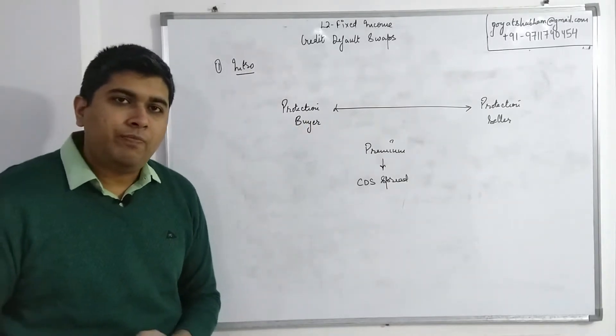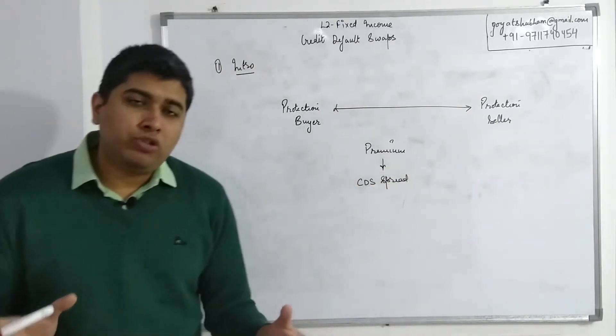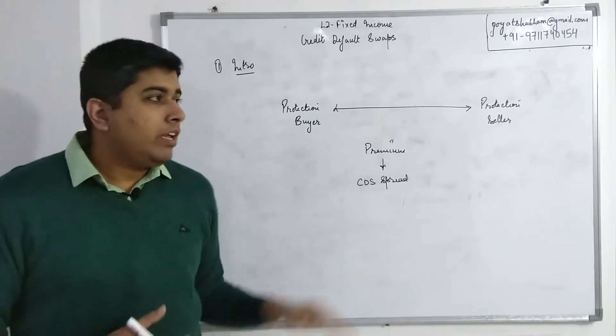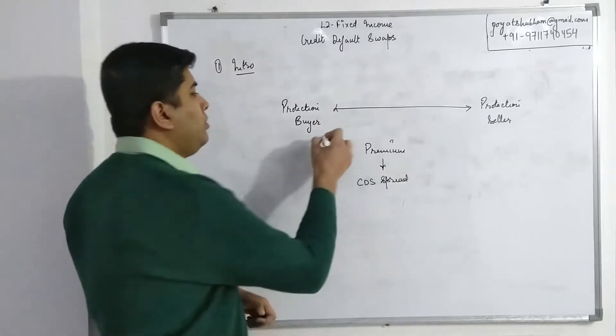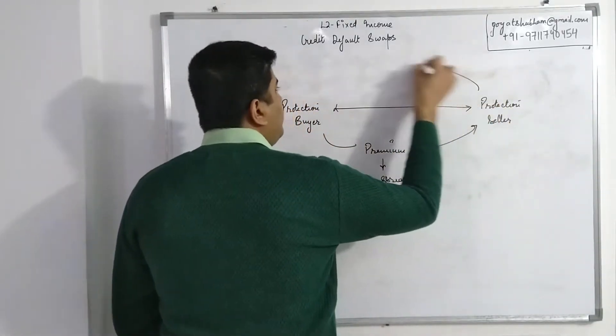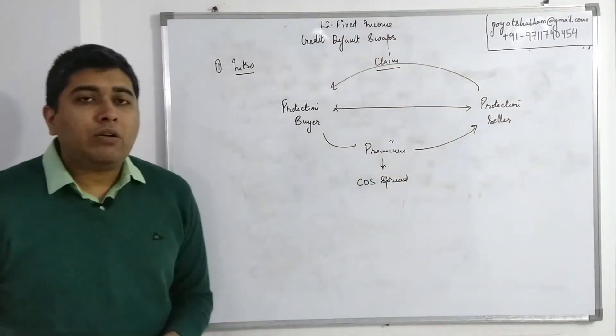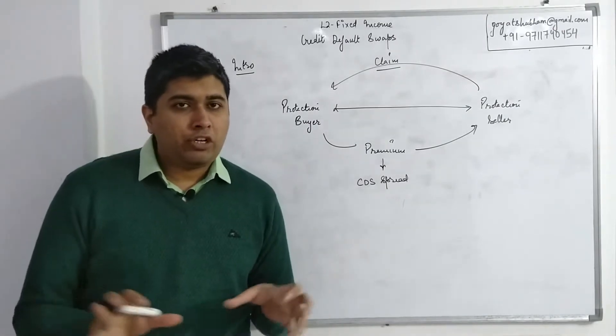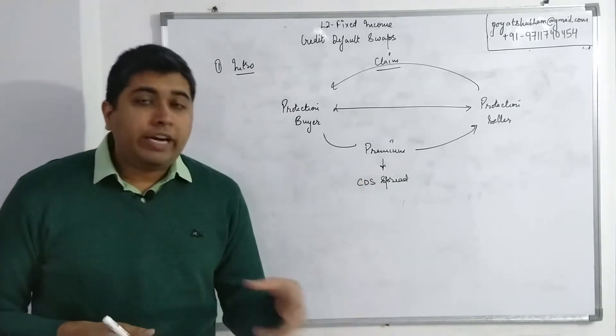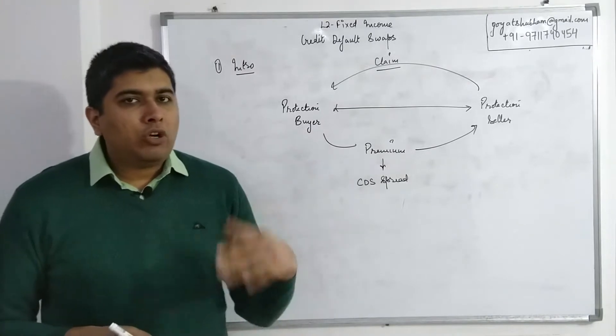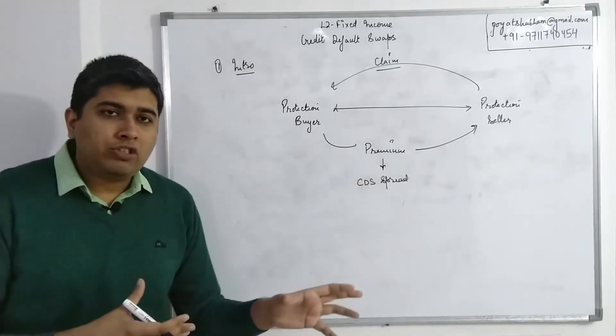Normally in case of CDS, the payments are in two different portions. One is the protection side of things where the protection buyer is paying the premium to the protection seller. The other payment would be in case of a claim. The claim would be that whatever security I bought the CDS on, if that company has some sort of a credit event, credit default, then whatever losses I have on that security would be covered by the protection seller.